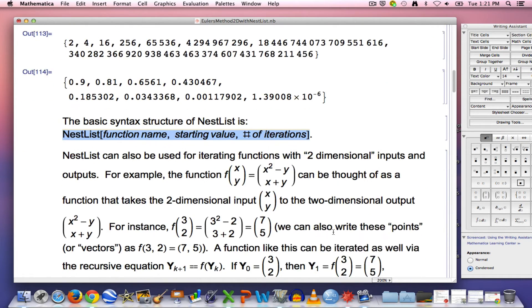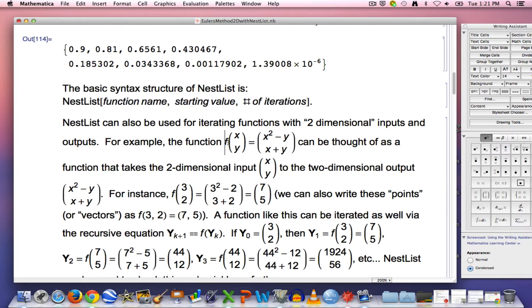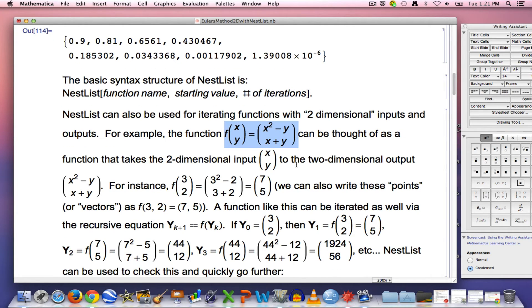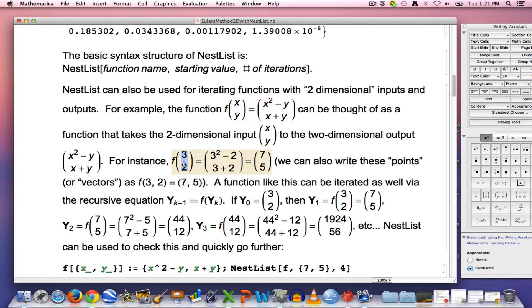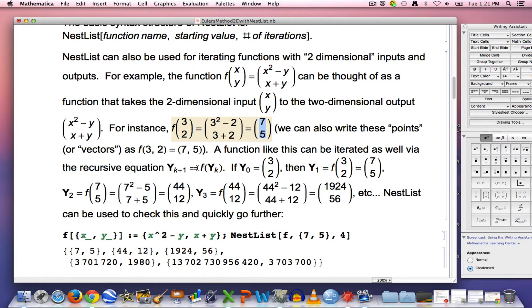You can also apply nest list to two-dimensional functions like this thing. I've written the inputs and outputs as column vectors. You don't have to do that. You could write them as points. Here we have a two-dimensional input x, y, which you can think of as a point or a vector, and it gives you a two-dimensional output. First component or first coordinate x squared minus y, second component or second coordinate x plus y. For example, if you plug in x equals 3 and y equals 2, you'll get the output 7, 5.